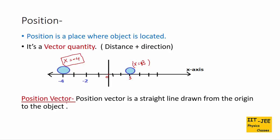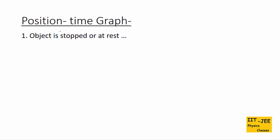What is a position vector? A position vector is a straight line drawn from the origin to the object. For this ball, we start from the origin and draw up to the object. The direction of this position vector is towards the positive axis. Similarly, we can draw the position vector for the other ball — it starts from the origin, moves up to the object, and the arrow shows the direction of the position.